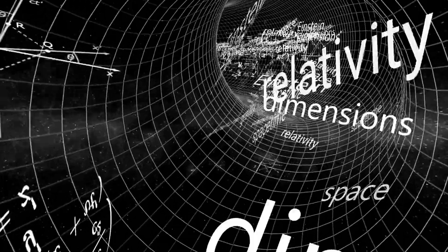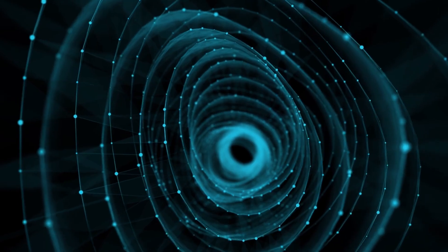Einstein's general relativity breaks down at very small scales such as at the center of black holes or during the initial moments of the Big Bang.